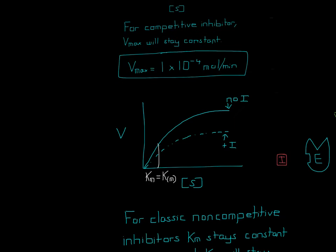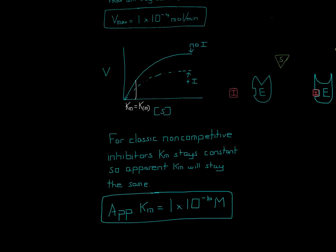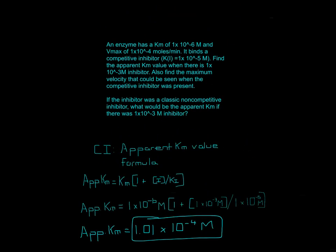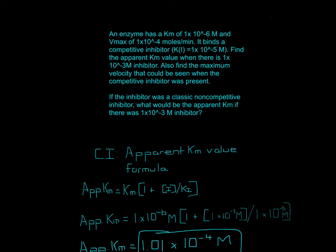For this part, it's conceptual even though it seems like it would require math. For classic non-competitive inhibitors, Km stays the same and the apparent Km will also stay the same. Remember: Km is the original affinity, while apparent Km is measured after the inhibitor is added. The apparent Km will remain 1×10⁻⁶ — the same as the enzyme Km given in the problem — when you add a non-competitive inhibitor.